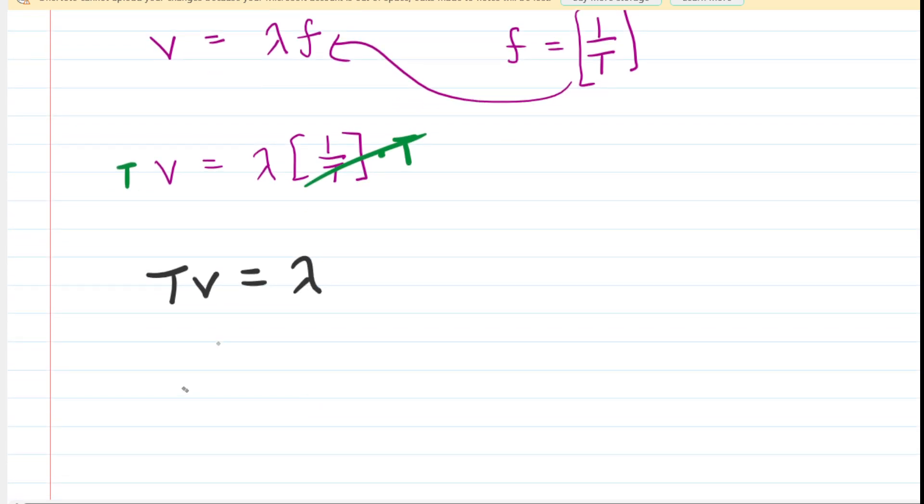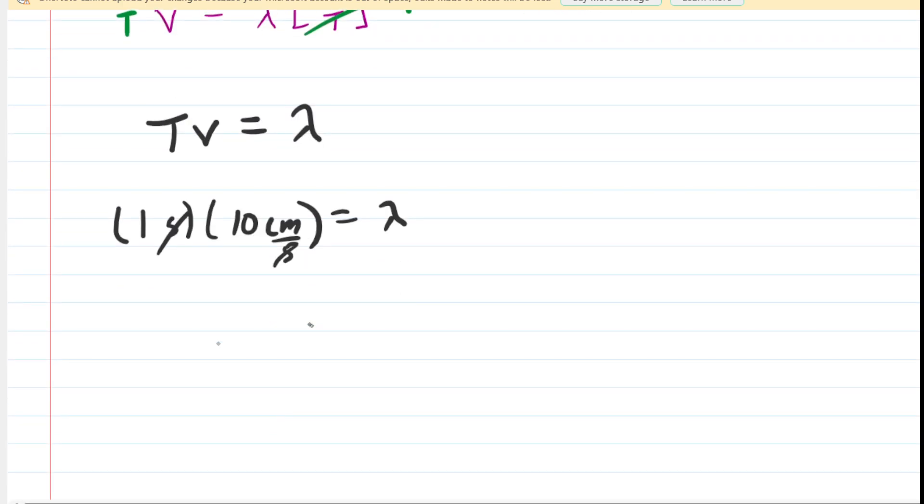So now, all we need to do is plug in. We know the period from earlier was one second. The speed is given as 10 centimeters per second. And then, when we multiply these two numbers, dimensionally the seconds are going to cancel out. We have 1 times 10. The wavelength is 10 centimeters. That is the correct answer for the wavelength of the standing wave.